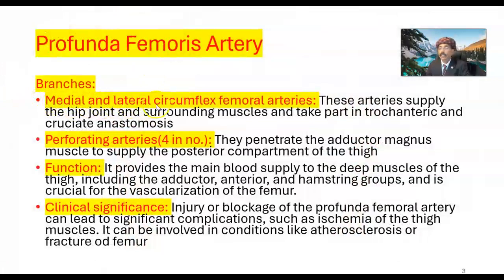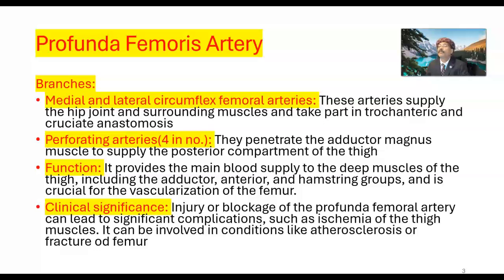The medial and lateral circumflex femoral arteries supply the hip joint and surrounding muscles, and take part in the trochanteric and cruciate anastomoses. The trochanteric anastomosis is at the level of the greater trochanter of the femur, formed by the superior and inferior gluteal arteries and the lateral and medial circumflex femoral arteries. The cruciate anastomosis is formed by the inferior gluteal artery, lateral and medial circumflex femoral arteries, and the first perforating artery.